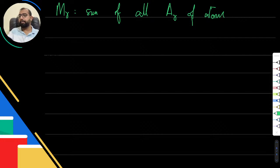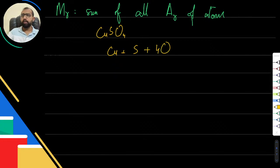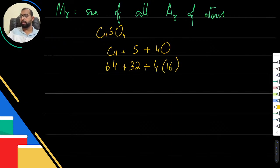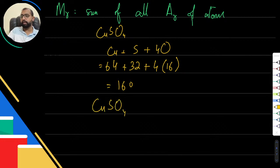Let's take copper sulfate as an example. Copper sulfate contains copper, sulfur, and four oxygen atoms. Listing all atoms and taking values from the periodic table: copper is 64 in your syllabus, sulfur is 32, and oxygen is 4 × 16 = 64. Adding them all: 64 + 32 + 64 = 160. So the Mr of copper sulfate is 160.